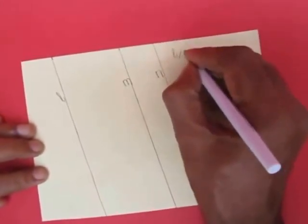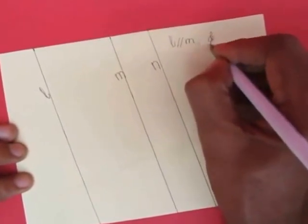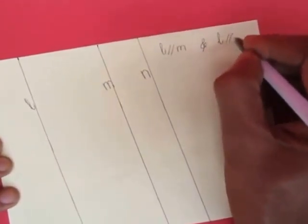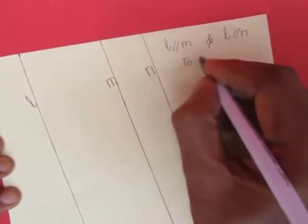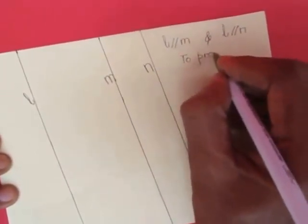So if a line l is parallel to m and it is also parallel to n, what about lines m and n? Are they parallel too? This is what we call the transitivity property and we will prove it here.